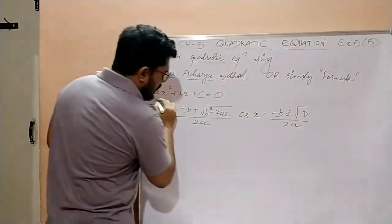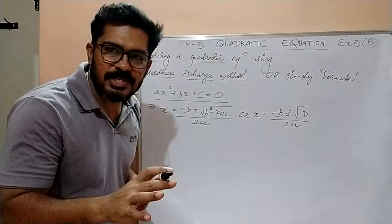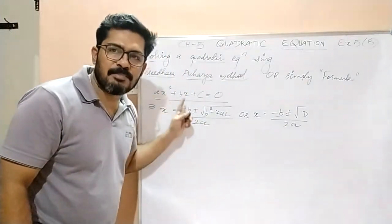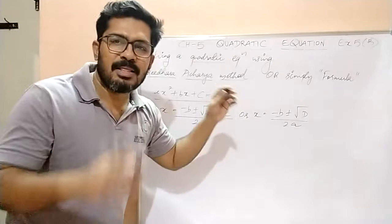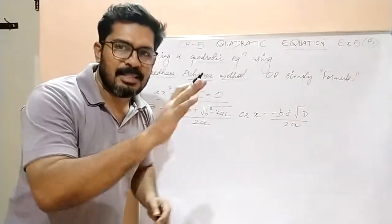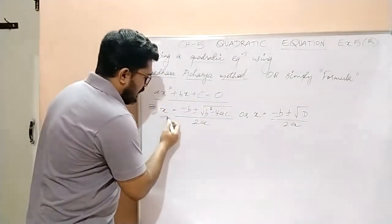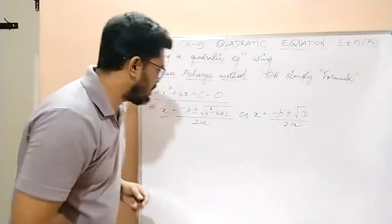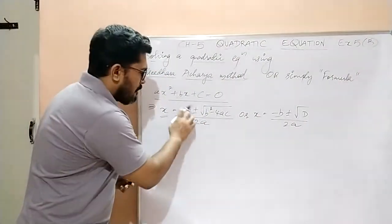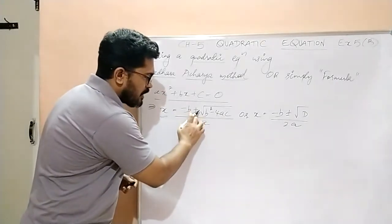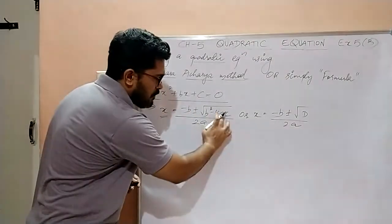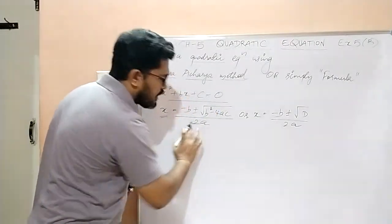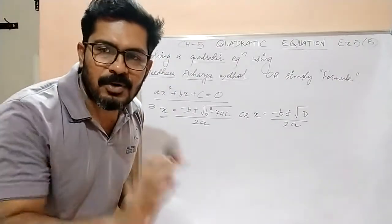So then if the quadratic equation given to you is ax² + bx + c = 0, that is in the general format, then the formula to find the value of x or the solution of the equation is x = (-b ± √(b² - 4ac)) / 2a.